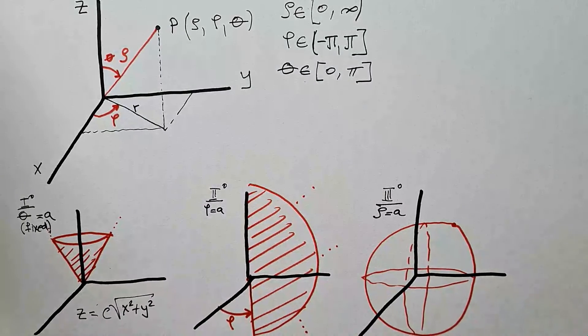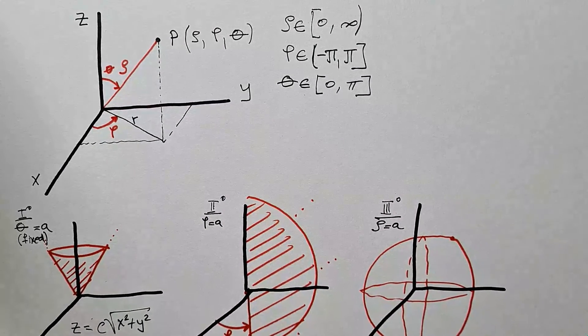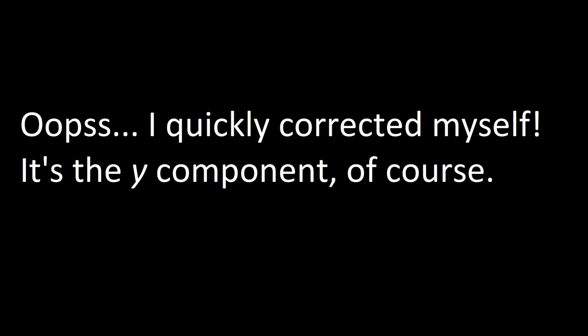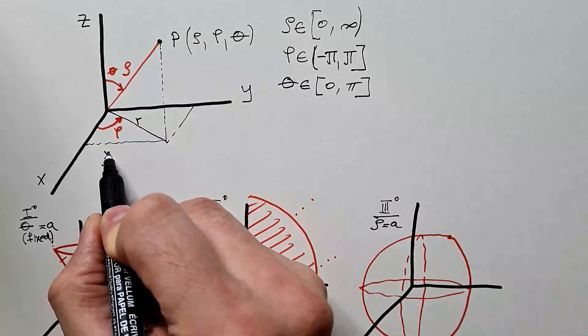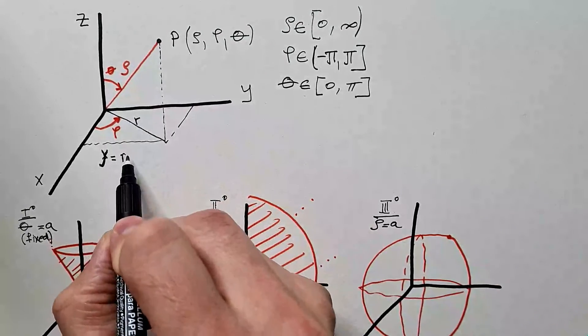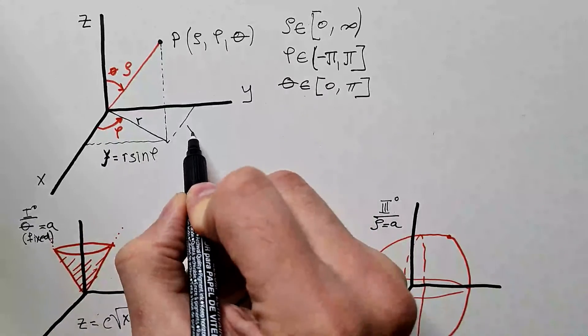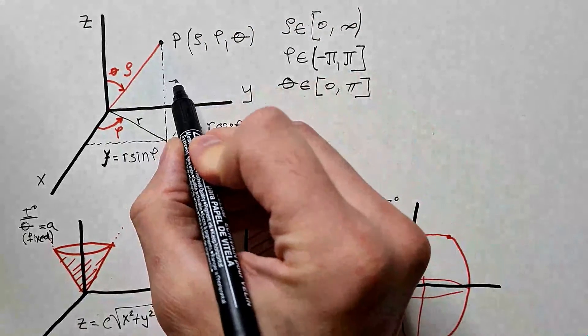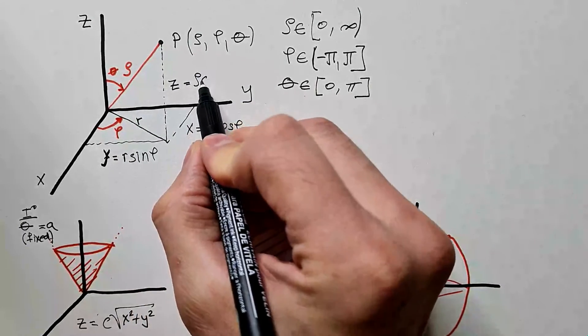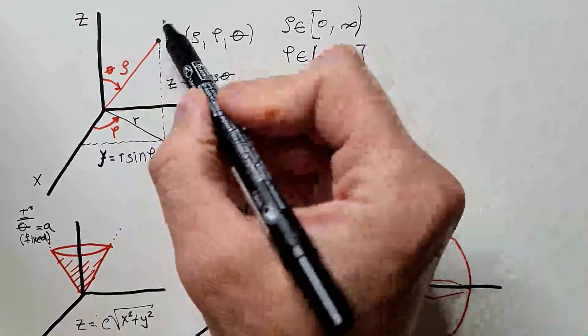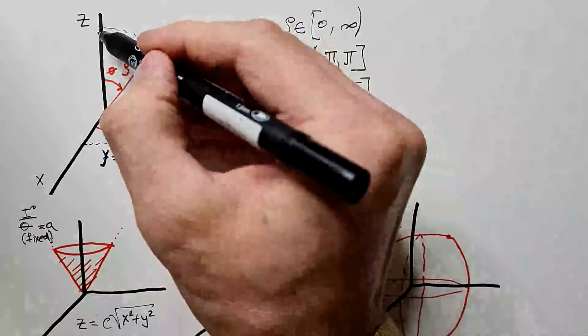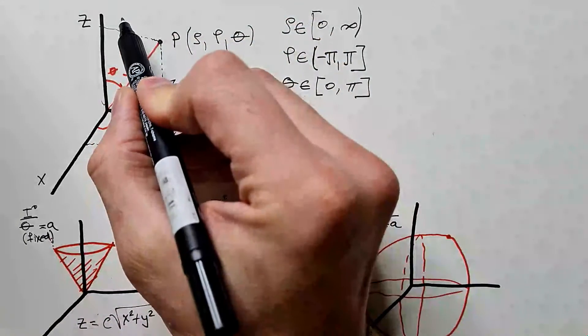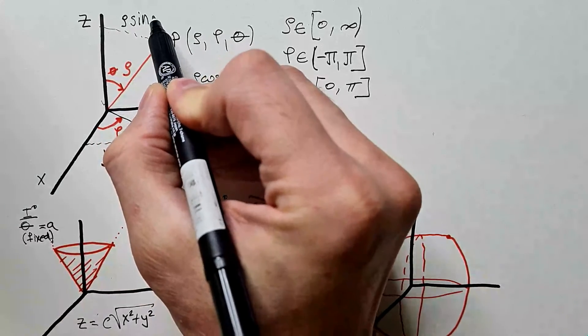Now, let's go back to this figure and find relationship between Cartesian coordinate system and spherical coordinate system. Notice from this figure that this y-component is equal r sine phi. Similarly, this x-component is r cosine phi. This height z is clearly equal rho cosine theta. How did I conclude that? Because this height z is the same as this, and this is angle theta. This top over here would be rho sine theta.